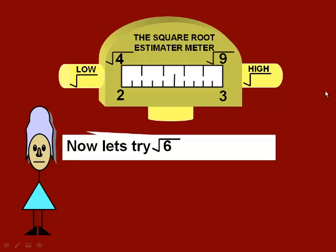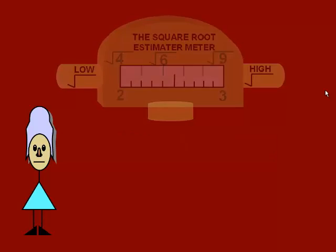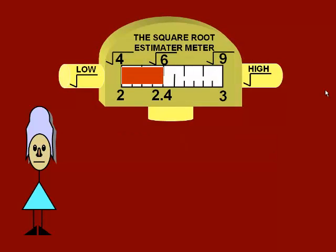Now, let's put square root 6 on the scale and see what happens. We come up with an estimate of 2.4. This is accurate to one decimal place.